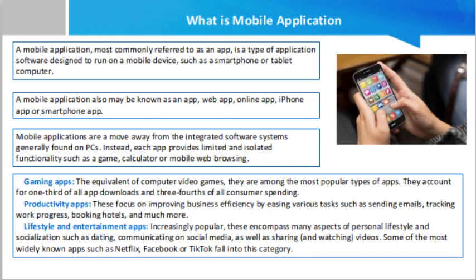There are several types of apps currently available. Gaming apps are the equivalent of computer video games and are among the most popular types of apps — they account for one-third of all app downloads and three-fourths of all consumer spending. Productivity apps focus on improving business efficiency by easing tasks such as sending emails, tracking work progress, and booking hotels.